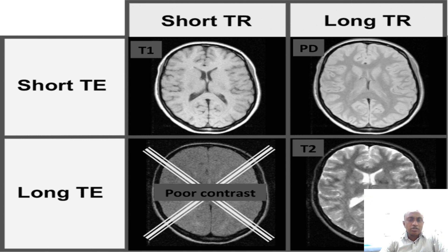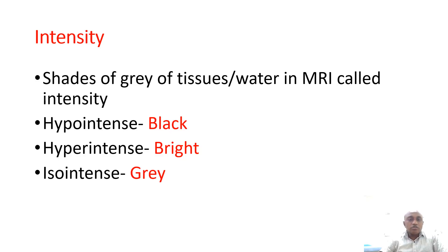Here is an example: short TE and short TR produces a T1 image, and long TE and long TR produces a T2 image. The shades of gray in tissues or water in MRI is called intensity. If it is hypointense, it looks black. If it is hyperintense, it looks bright. If it is isointense, it looks gray.